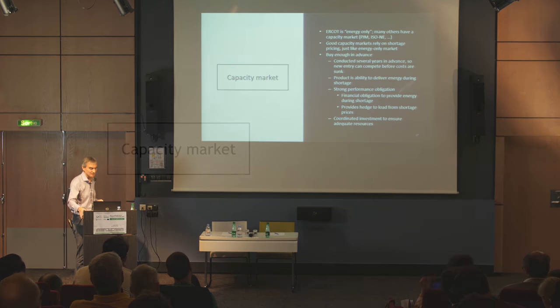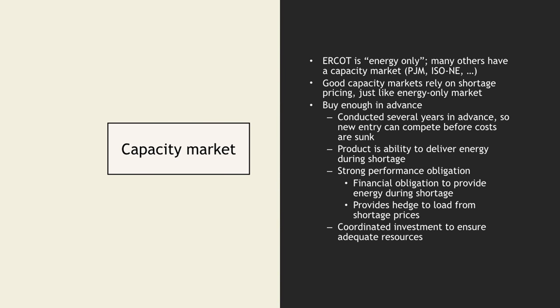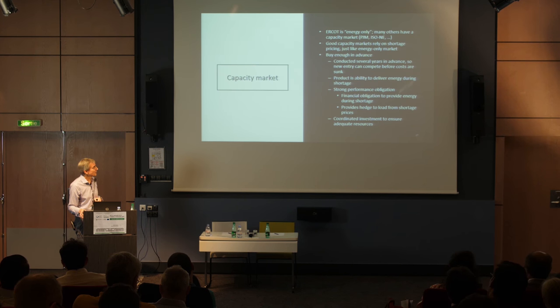One thing the Texas market doesn't have is a capacity market. The East Coast markets in the US — because of the bad economics of entry — found it necessary to introduce the capacity market to maintain adequate resources, and it's taken a long time to get it right. In Texas, it's really the departure of large coal units that's leading to the low reserve margin. The big challenge for long-run investment in the US is actually the chaotic climate policy, which is really messing things up.